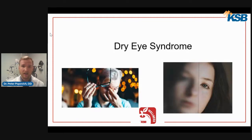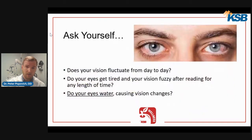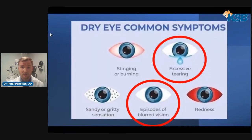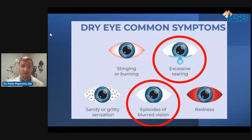When we talk about dry eye, it's not only the symptom of dryness — it's actually a whole group of symptoms, and it's ultimately caused by a lack of tear layer. Ask yourself: does your vision ever fluctuate from day to day? Do your eyes ever tire or feel fuzzy when reading? Do your eyes ever feel watery or cause blurred vision? If you answer yes to any of these questions, you likely have dry eye syndrome.